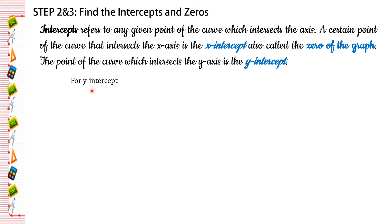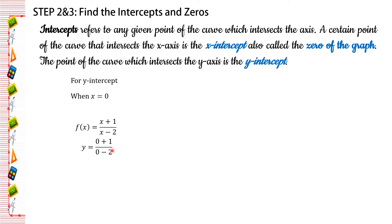For the y-intercept, we equate x to 0 and substitute into the function f of x equals x plus 1 over x minus 2. So y equals 0 plus 1 over 0 minus 2. That gives us 1 over negative 2, which is negative 1 half. So the y-intercept is y equals negative 1 half.